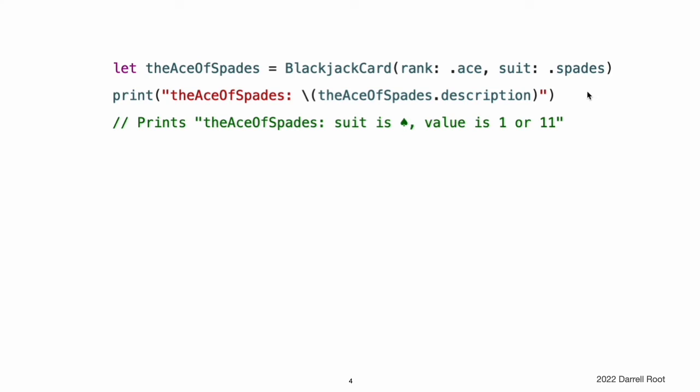You can use this initializer to initialize a new constant called the Ace of Spades. Even though Rank and Suit are nested within BlackjackCard, their type can be inferred from context, and so the initialization of this instance is able to refer to the enumeration cases by their case names, .ace and .spades, alone.